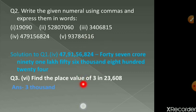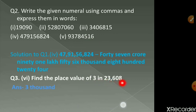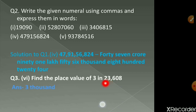Now moving on to question number 3: find the place value of 3 in 23608. Let's check the place value of each digit — 8 is ones, 0 is tens, 6 is hundreds, 3 is thousands. So we have written the place value of 3 to be three thousand. You can also write it as 3 × 1000 = 3000.